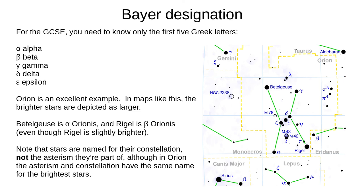Here we can see an excellent example in Orion. Star maps like this depict brighter stars as larger dots. Betelgeuse is Alpha Orionis, and Rigel is Beta Orionis. Rigel is actually slightly brighter, but as we said, Bayer wasn't too strict in applying his rules. You don't need to learn the Latin names for constellations, as it should be clear that, for example, Orionis is Orion. Note that we name stars for their official constellation rather than their unofficial asterism. The brightest stars in the constellation Orion happen to be the brightest stars in the asterism Orion, but this isn't always the case. Also note that the Bayer designation is only used for stars.